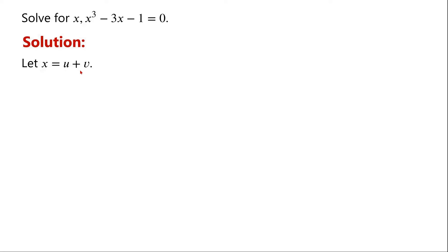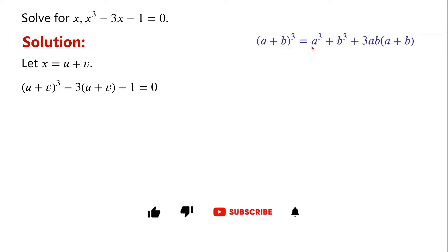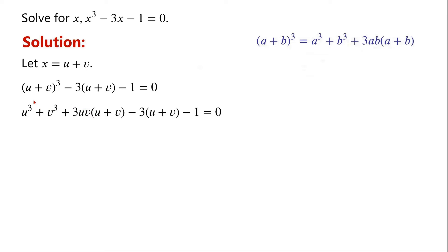With x equal to u plus v, the given equation can be written as (u + v)³ minus 3 times (u + v) minus 1 equals 0. Since (a + b)³ equals a³ plus b³ plus 3ab(a + b), we can write (u + v)³ as u³ plus v³ plus 3uv(u + v). These two terms have a common factor (u + v), so it can be written as 3(u + v)(uv minus 1).